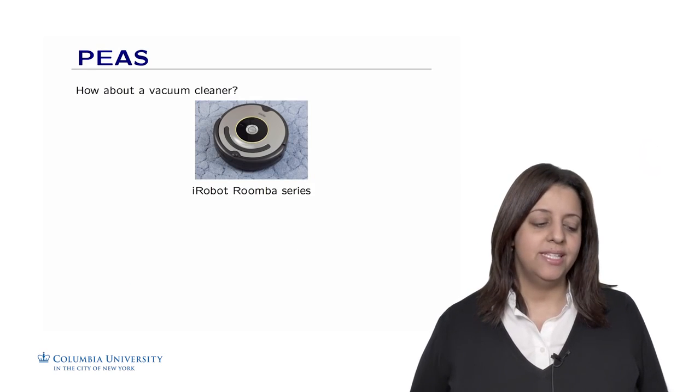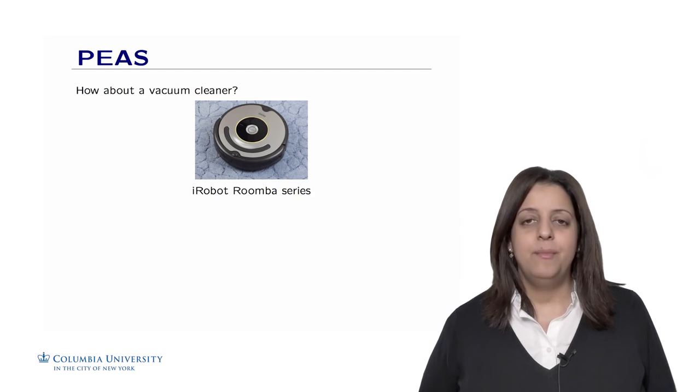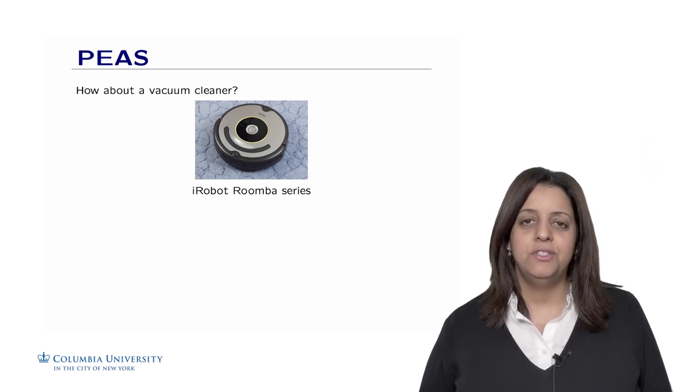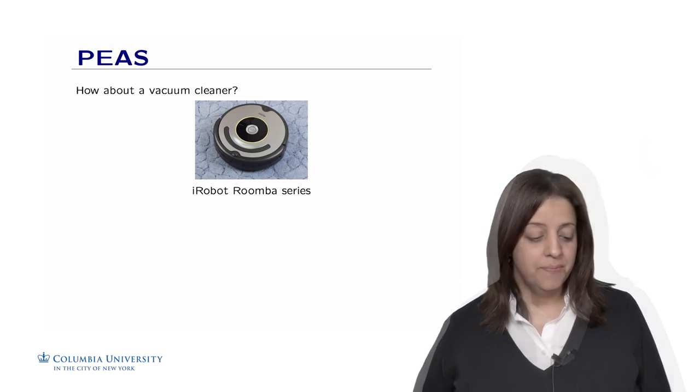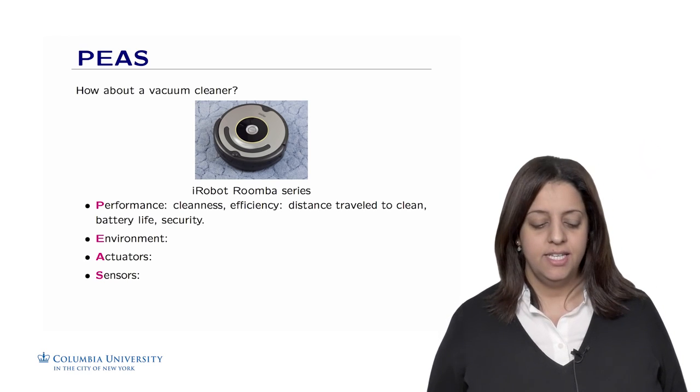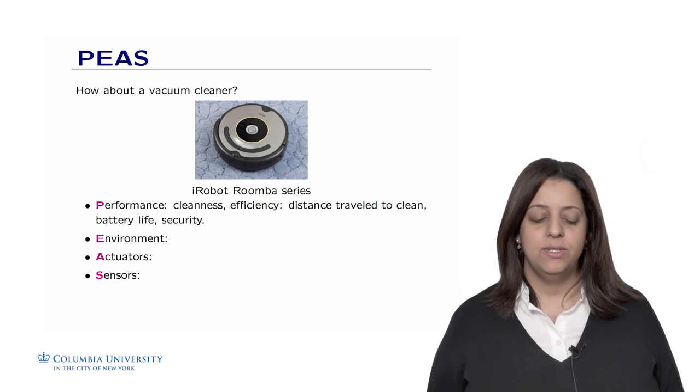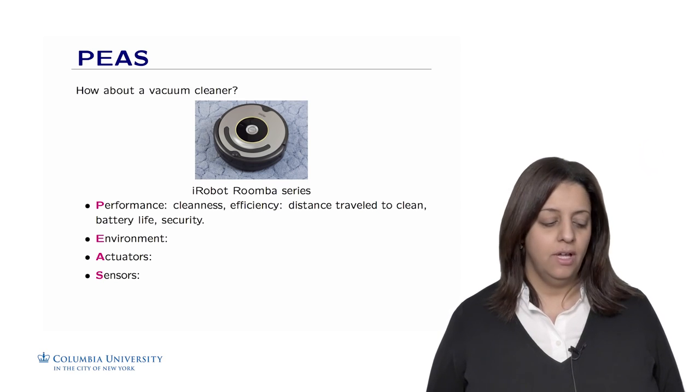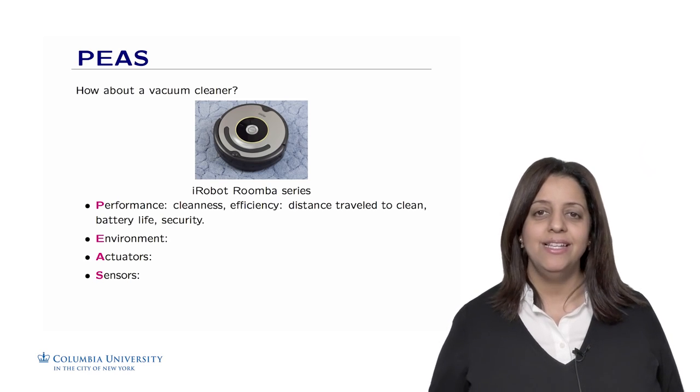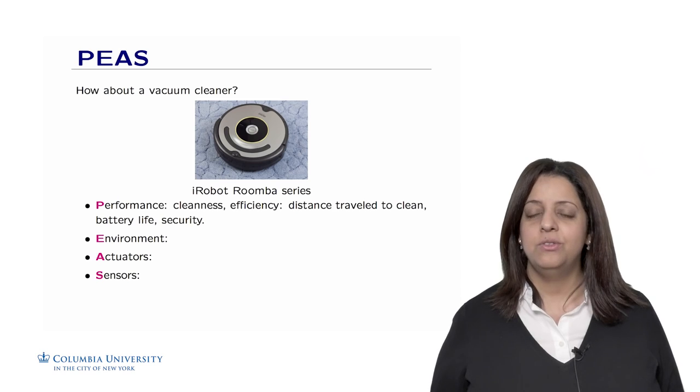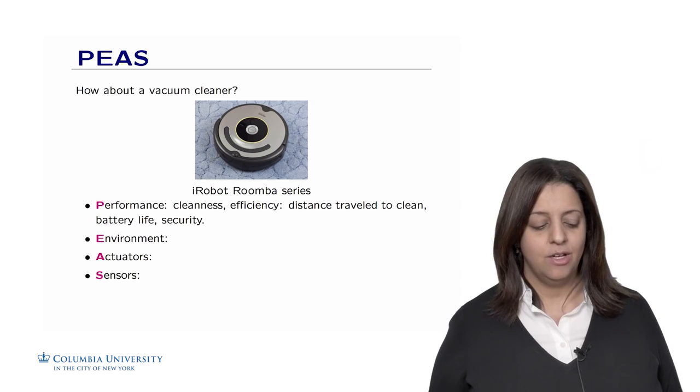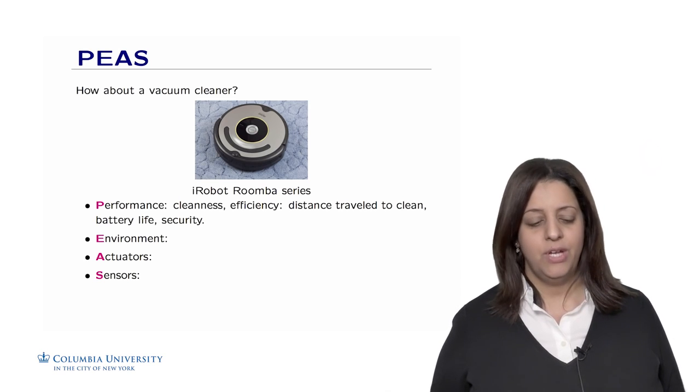As a second example, let's take the vacuum cleaner. You are probably familiar with the iRobot Roomba series that started about 10 years ago, that you could put in your room to clean the floor. The performance of a vacuum cleaner could be measured in terms of cleanness of the room, the efficiency, that is the distance traveled to clean, or the battery life. You care also about the performance in terms of security, putting a device in your room that has eyes, has cameras, and is potentially connected to Wi-Fi or Internet, and you don't want this to be hacked. So security is a very important aspect of this device before you add it to your house.